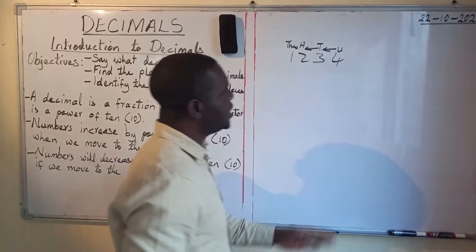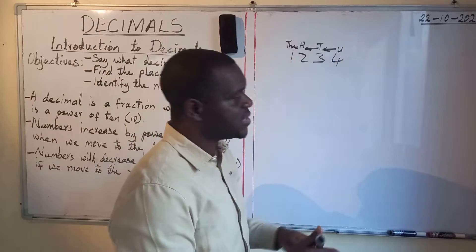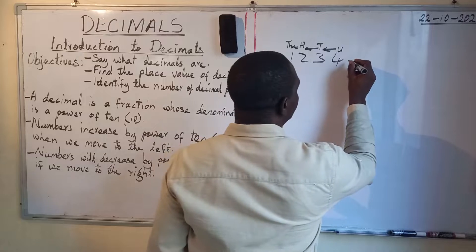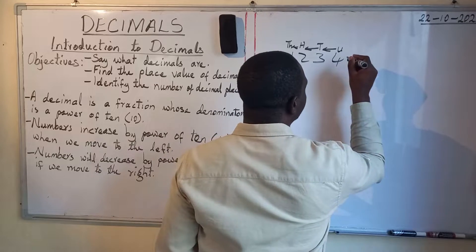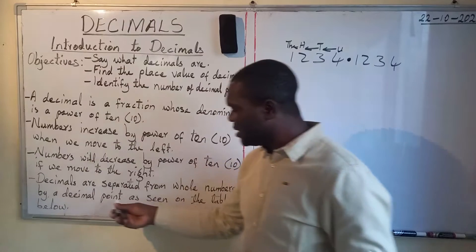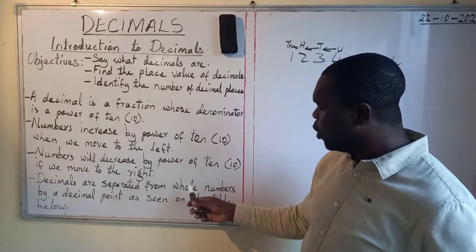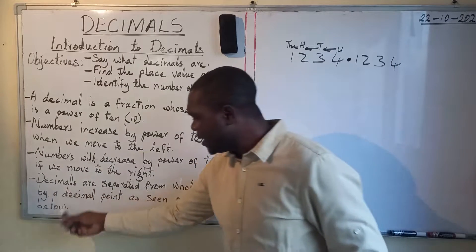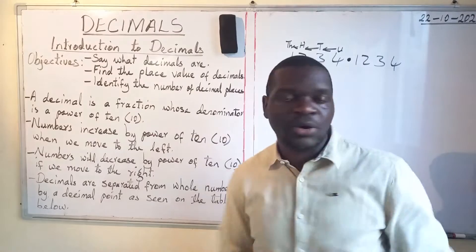From what we have on the board: a decimal is a fraction — that's why decimals are closely related to fractions. A decimal is a fraction whose denominator is a power of 10. A power of 10 means it can be 10, it can be 100, it can be 1,000, and so on.